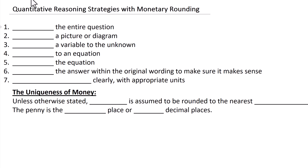First, we want to read the entire question, then we'll draw a picture where applicable. Next, we'll assign variables to the unknowns, then we'll translate to an equation, we'll solve the equation, and then we'll check the answer to make sure it makes sense in the situation, and then we'll state the answer.